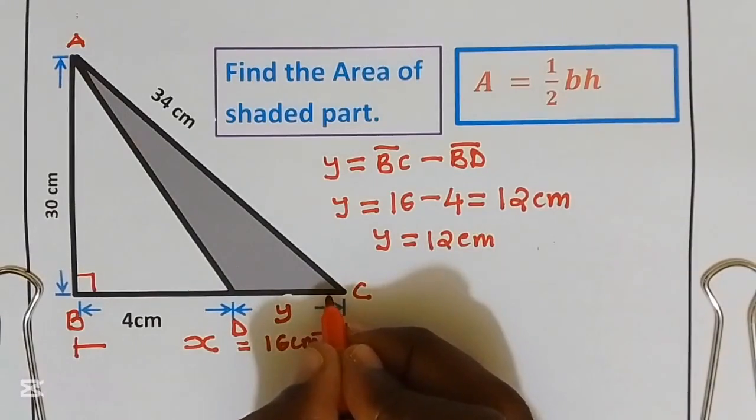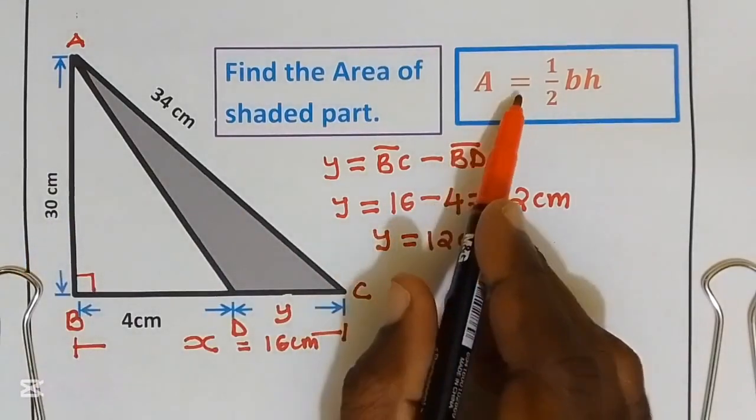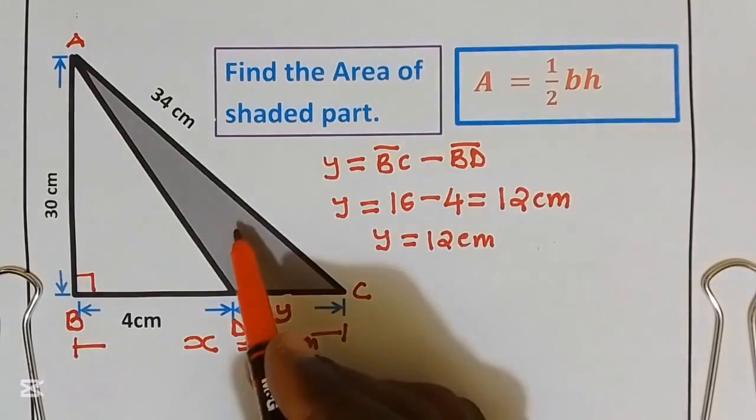Now we already have the base of the shaded part. All three triangles share a common height. We are going to use the area equals one-half multiplied by base multiplied by height to get the area of the shaded part.